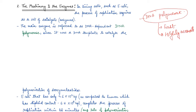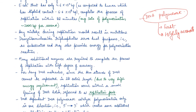Why do they have to be highly accurate? Because any small mistake during replication would result in a mutation, and these mutations would cause genetic disorders. Any small mistake in replication would result in a disorder. Energetically, replication is a very expensive process.